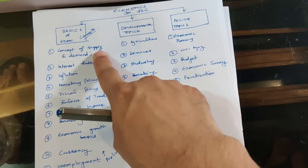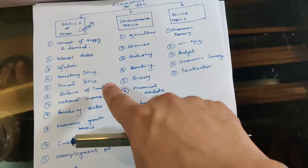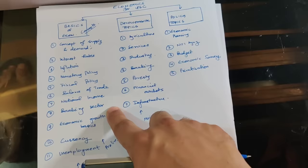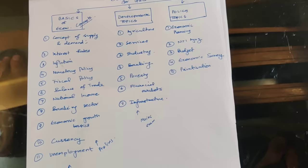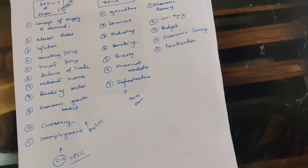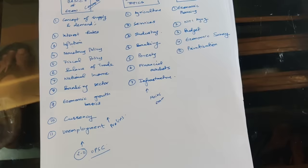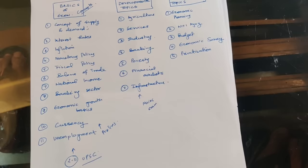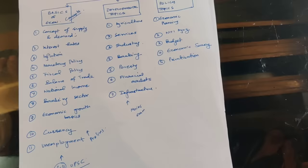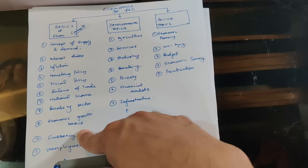So what are these core topics 2 to 11? They are: interest rates, inflation, monetary policy, fiscal policy, balance of trade, national income, the Indian banking and financial sector, economic growth basics — how economic growth is measured and various methods developed in India — then currency and unemployment. These 2 to 11 topics are the core topics for UPSC which you should definitely know, because questions from these topics are normally asked every year in prelims and sometimes in mains, though not heavily in mains since these are theoretical topics.